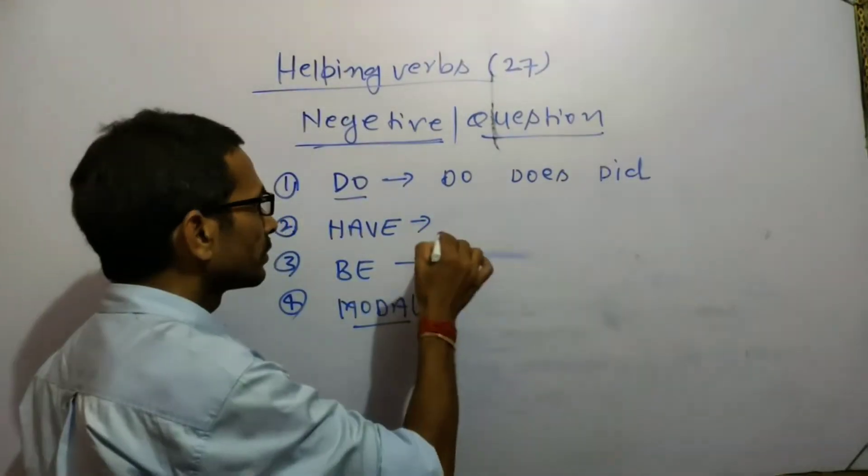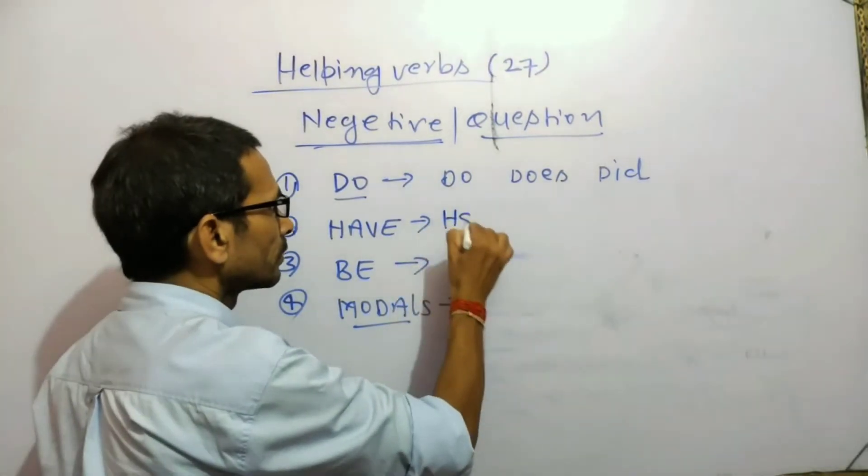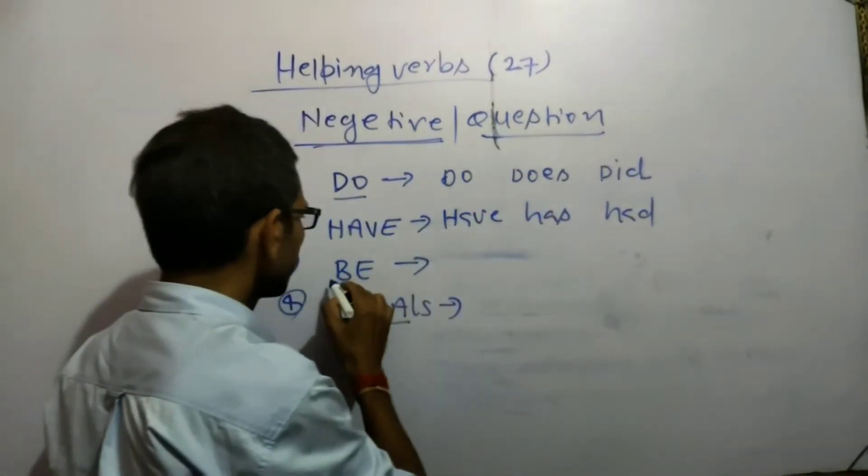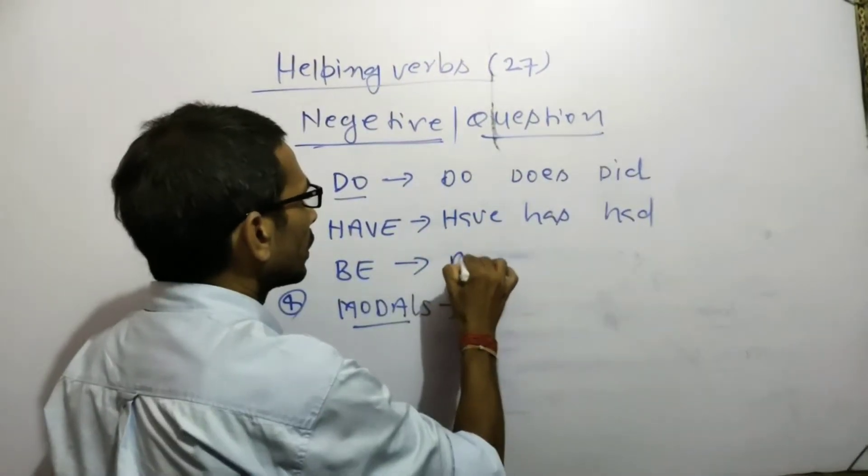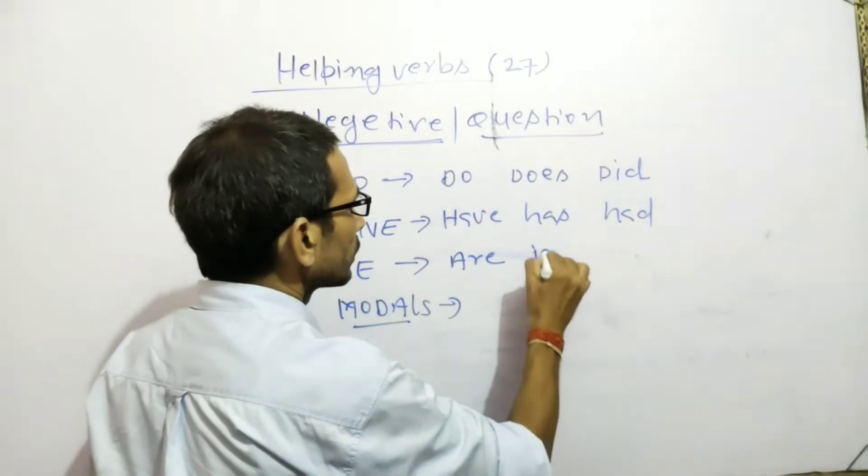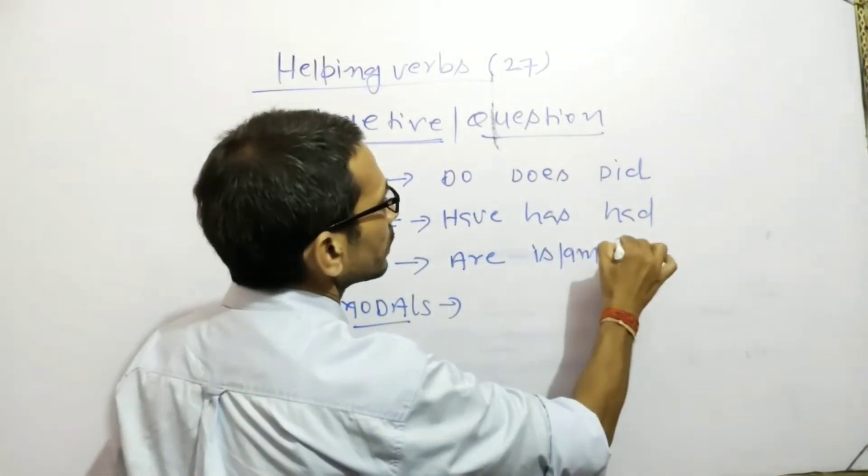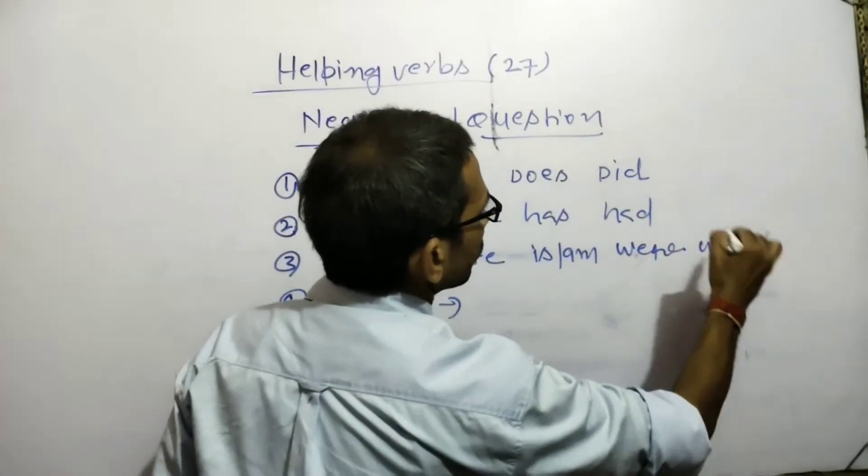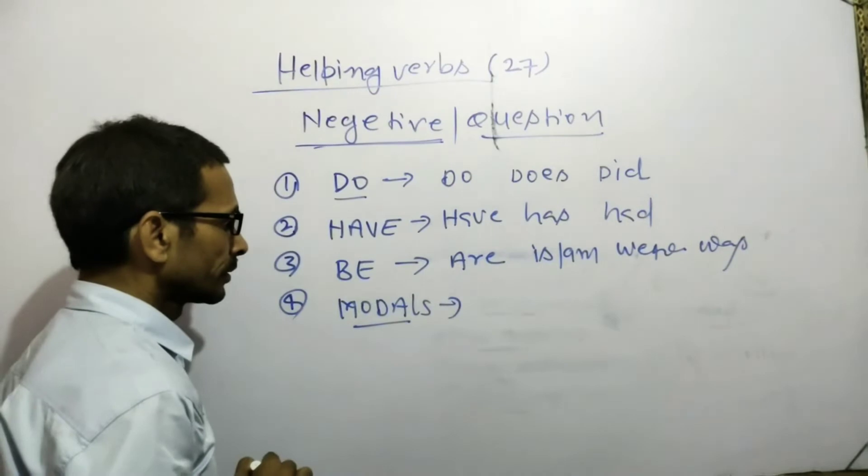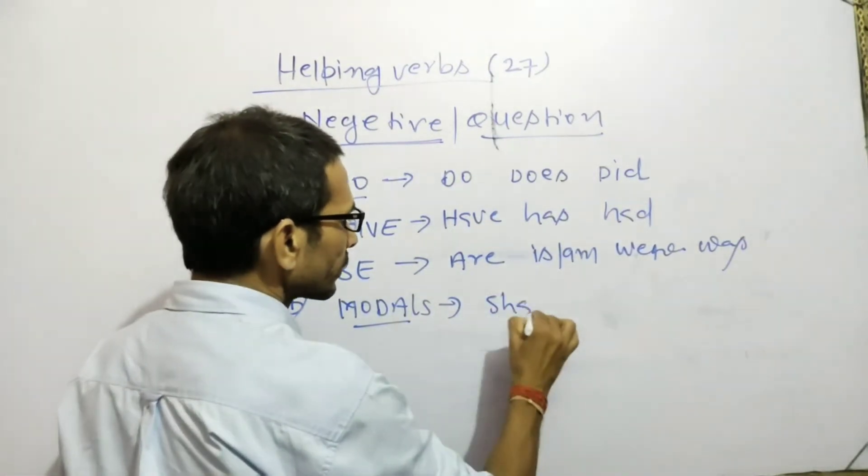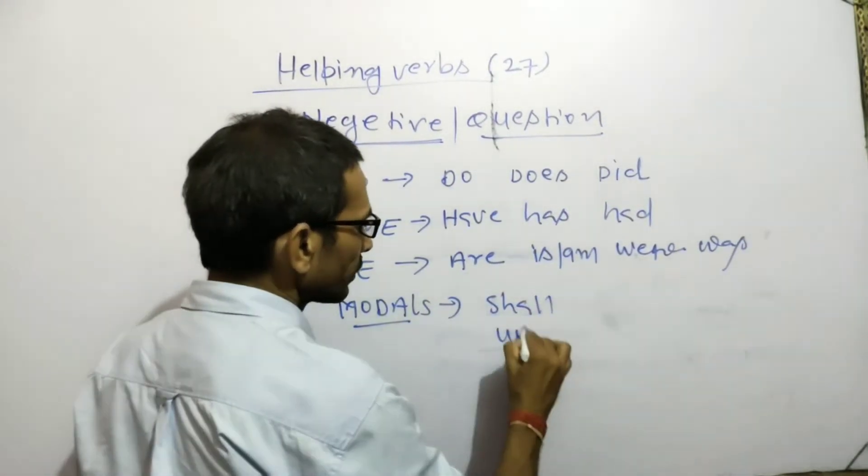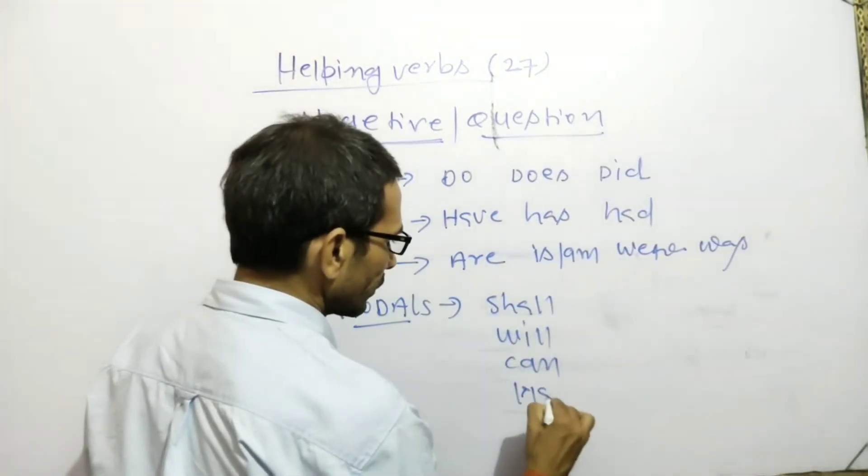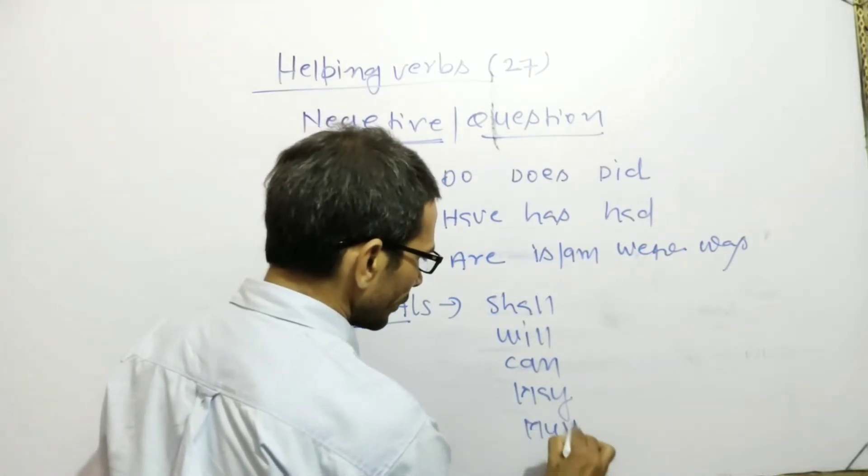HAVE contains: have, has, had. BE contains: are, is, were, was. MODALS include: shall, will, can, may, must.